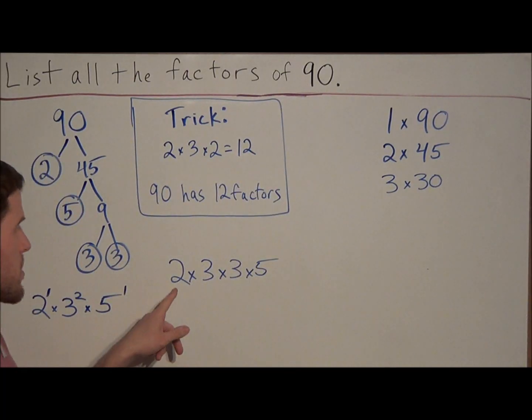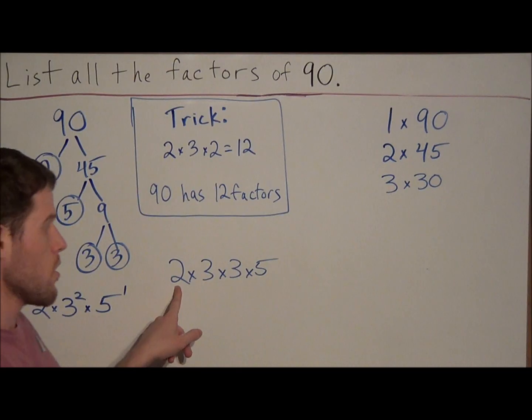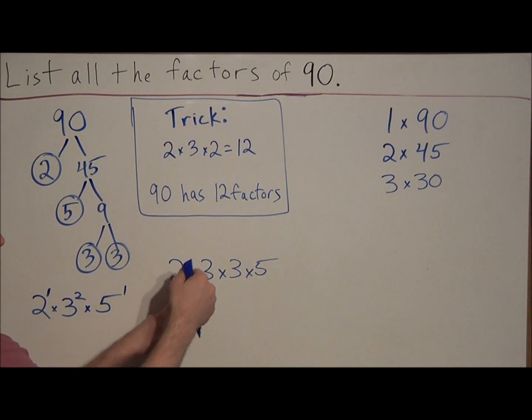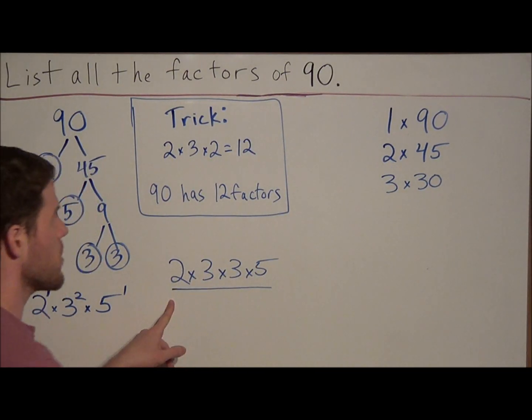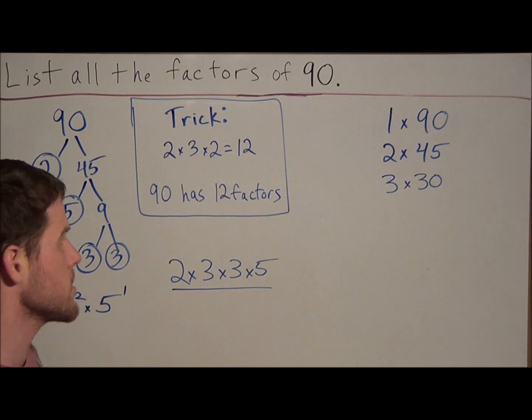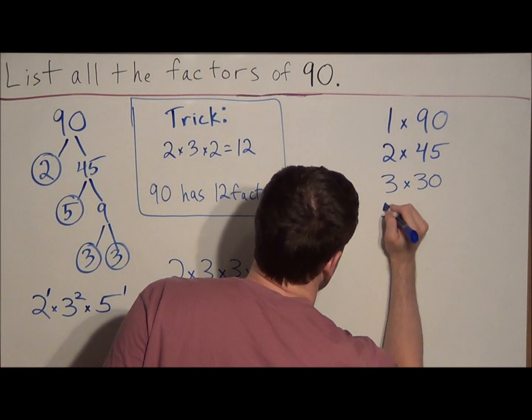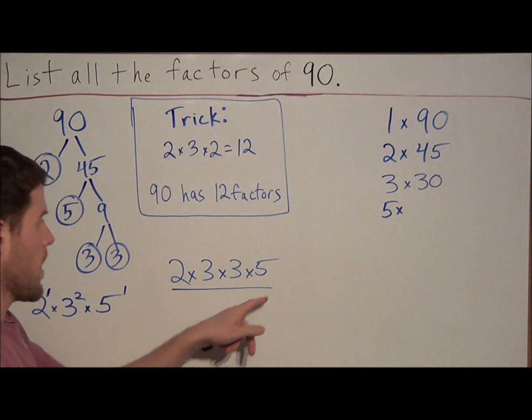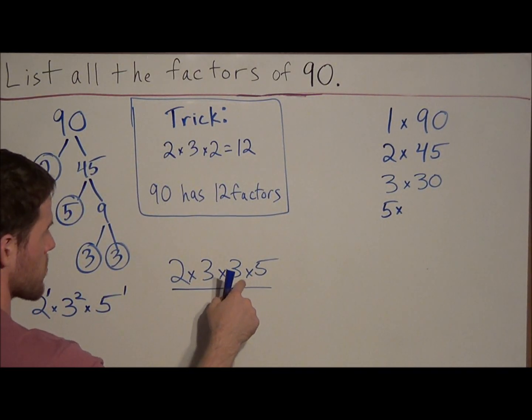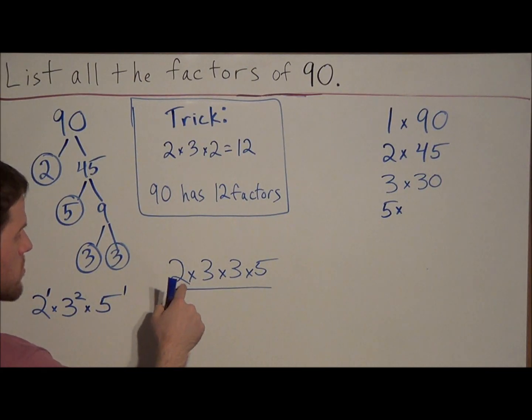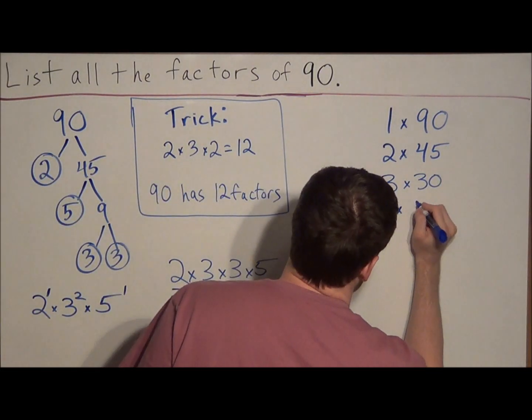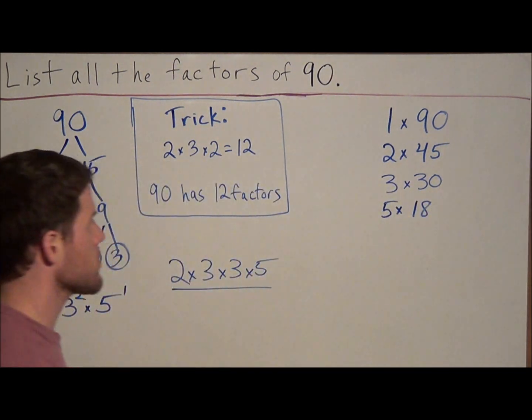4 is not a factor of 90, because notice in the prime factorization, we only have one factor of 2. We would need 2 times 2 in this string of factors. So we know that 4 is not going to divide into 90. Next, we could look at 5. 5 is going to divide into 90, because 90 ends in a 0. And notice 5 times, and we would have 3 times 3 times 2. 3 times 3 is 9, 9 times 2 is 18. So 5 times 18 is equal to 90.